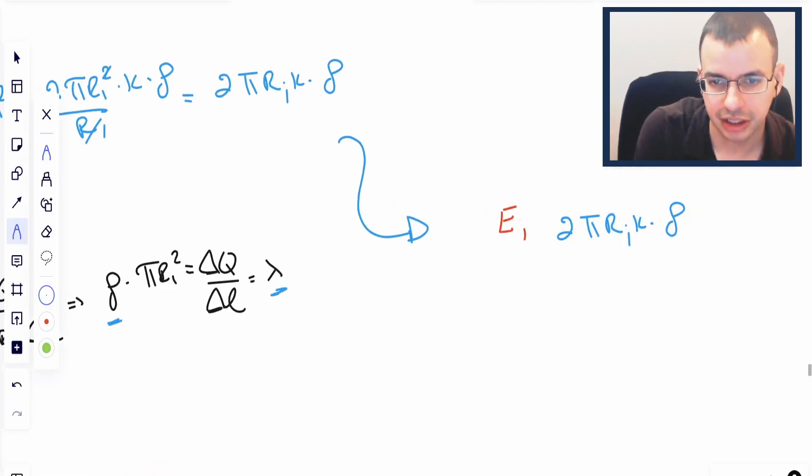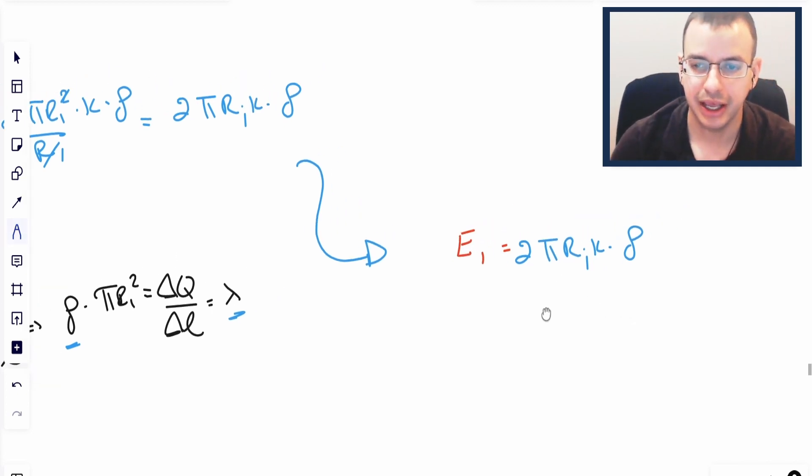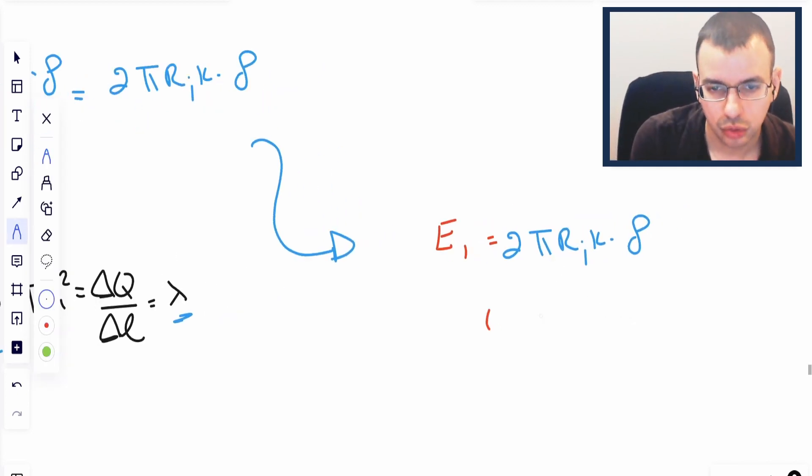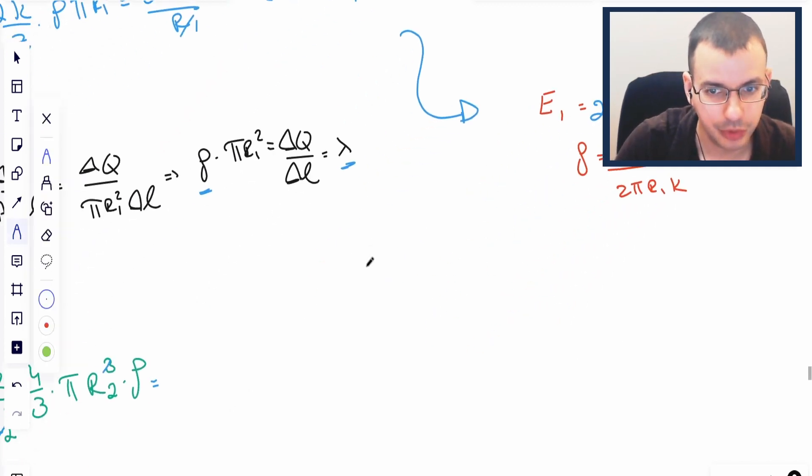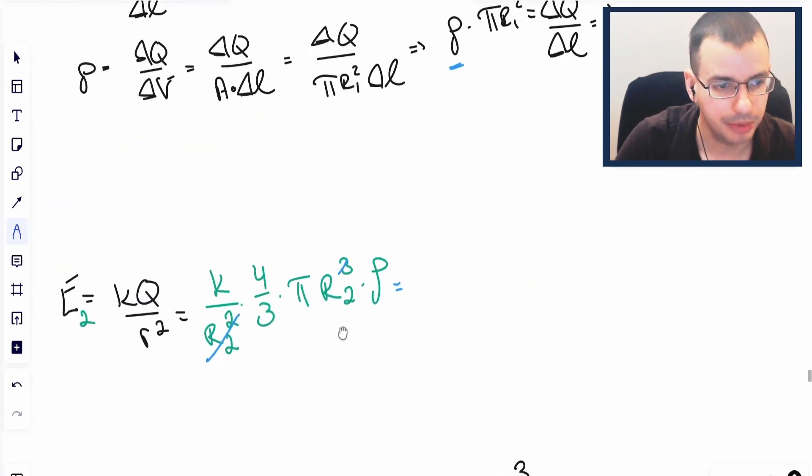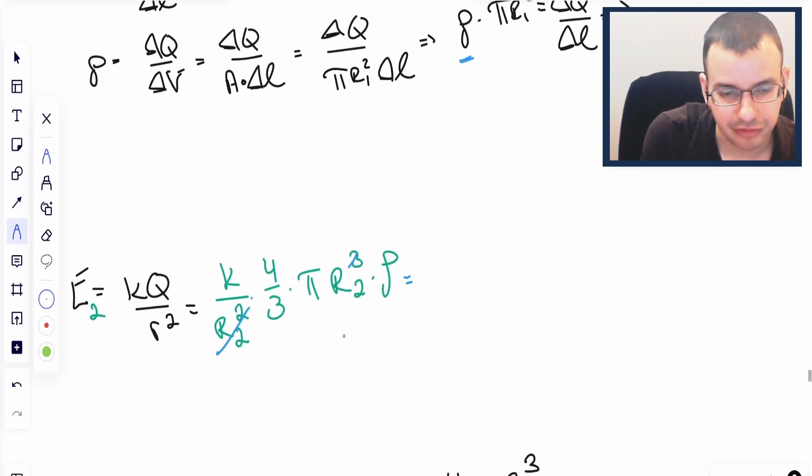This is E1. Rearranging, we get 2 pi R1 K rho. Rho equals E1 divided by 2 pi R1 K. And we can take that rho, which we know, put it down here.